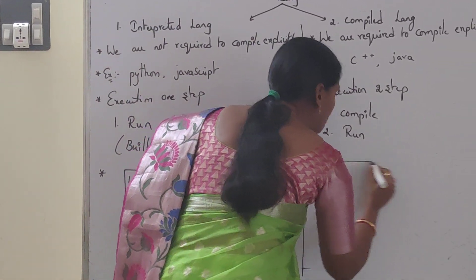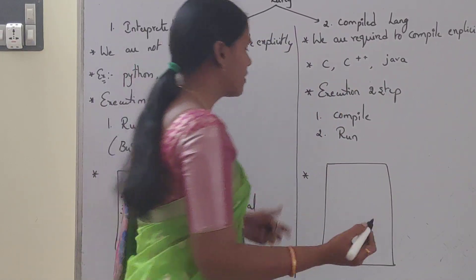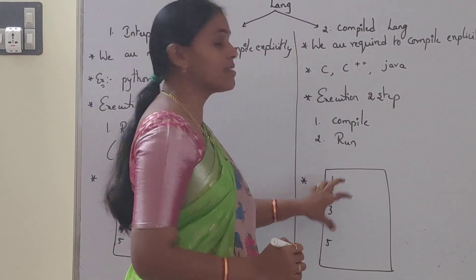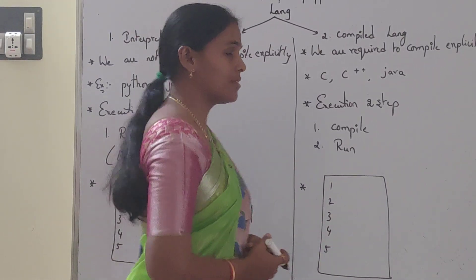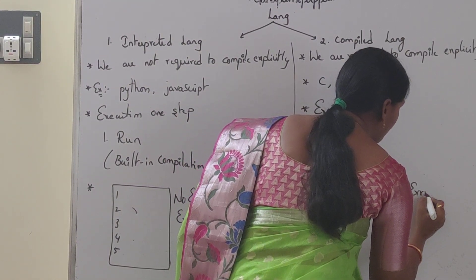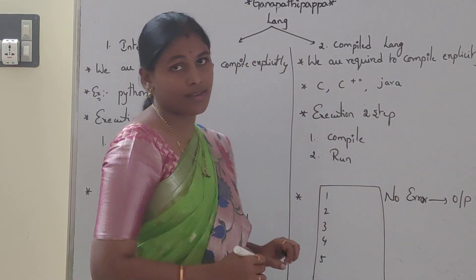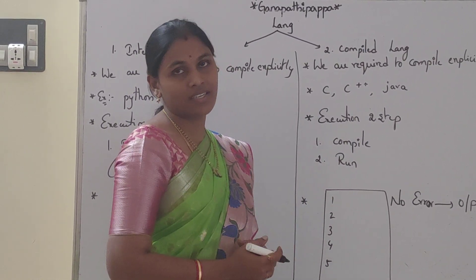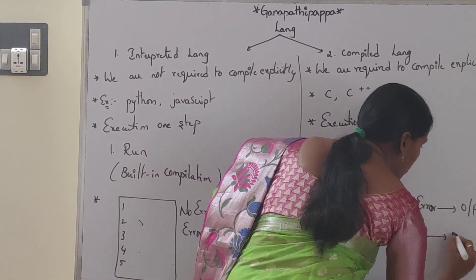This is the compiled program. This program contains five lines of code — one, two, three, four, five. If the program contains no errors, then it returns output. If the program contains any error at any point, then it doesn't return output at all.